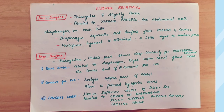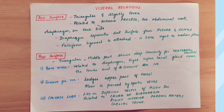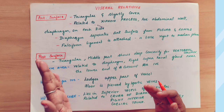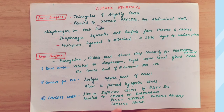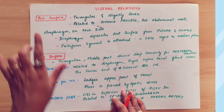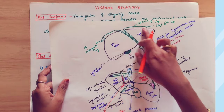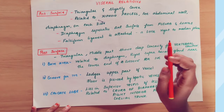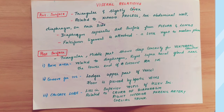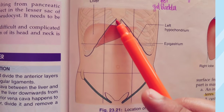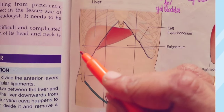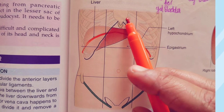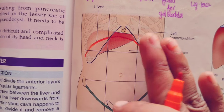Now coming to the visceral relation of the liver. There are five surfaces: the superior surface, the inferior surface, the anterior surface, the posterior surface, and the right surface. Starting with the anterior surface — it is triangular and slightly convex. It is related to the xiphoid process, the anterior abdominal wall, and the diaphragm on each side.